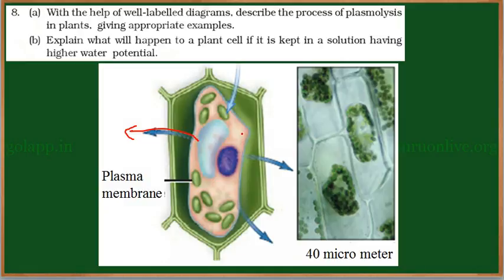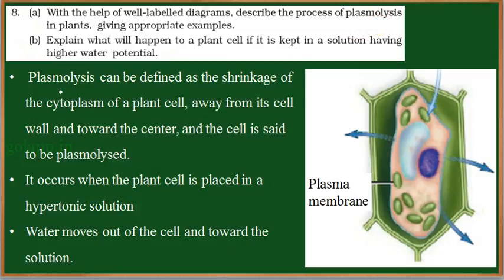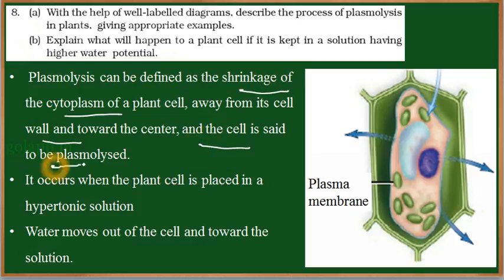As a result, the cell starts shrinking from the plasma membrane. This shrinkage of the plasma membrane is called plasmolysis. Plasmolysis can be defined as the shrinkage of the cytoplasm of a plant cell away from its cell wall towards the center.